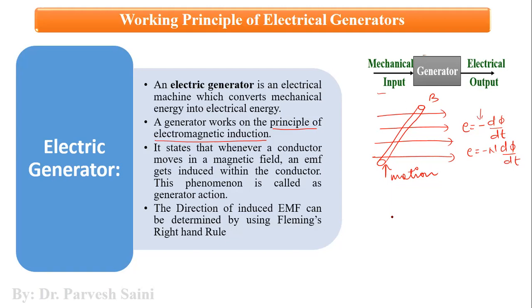For generator action, we must have a magnetic field, we must have a conductor, and there must be relative movement between the two. They should not be static or moving with the same velocity in the same direction, otherwise the relative movement would be zero, giving no dΦ/dt and hence no induced EMF.